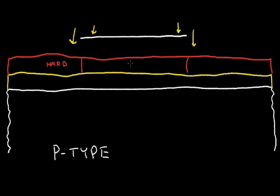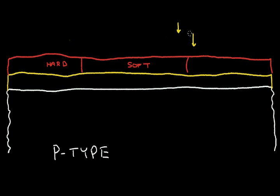The photoresist becomes hard where the light hits it, and it remains soft where the light is blocked. I can remove the light and remove my mask. Where it's hard, the photoresist will remain. I can then attack the resist with a chemical that will remove the soft region of the photoresist where the light was blocked.